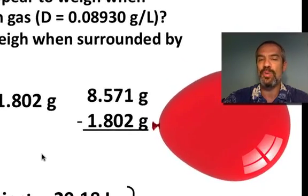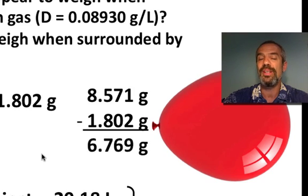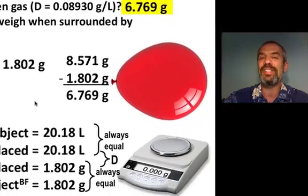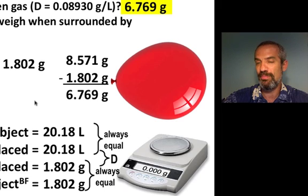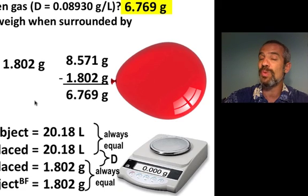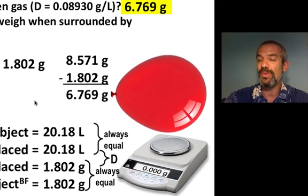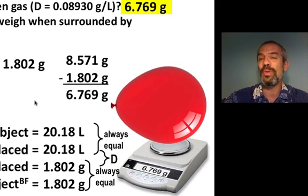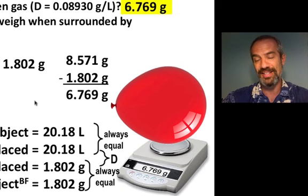So, if the balloon actually weighs 8.571 grams, it loses 1.802 grams, the answer to the first part is 6.769 grams. And, if you were to put that balloon on that scale, remember, it's a helium balloon, but it's surrounded by hydrogen. And, helium is more dense than hydrogen, so it sinks and gives you a reading there of 6.769 grams.